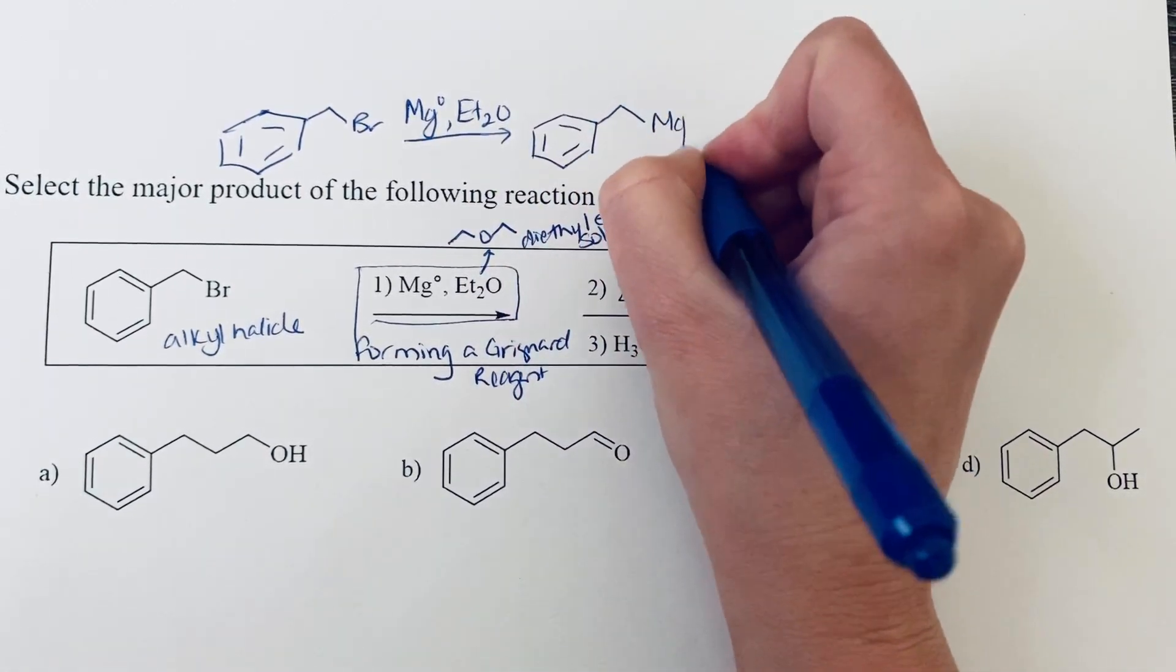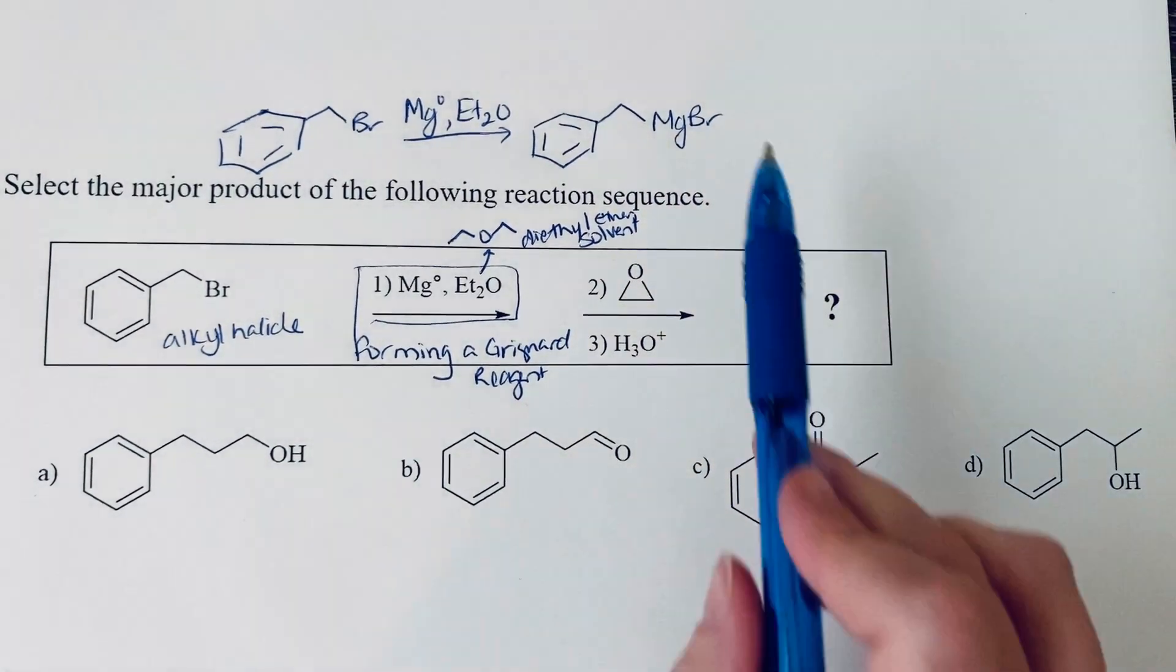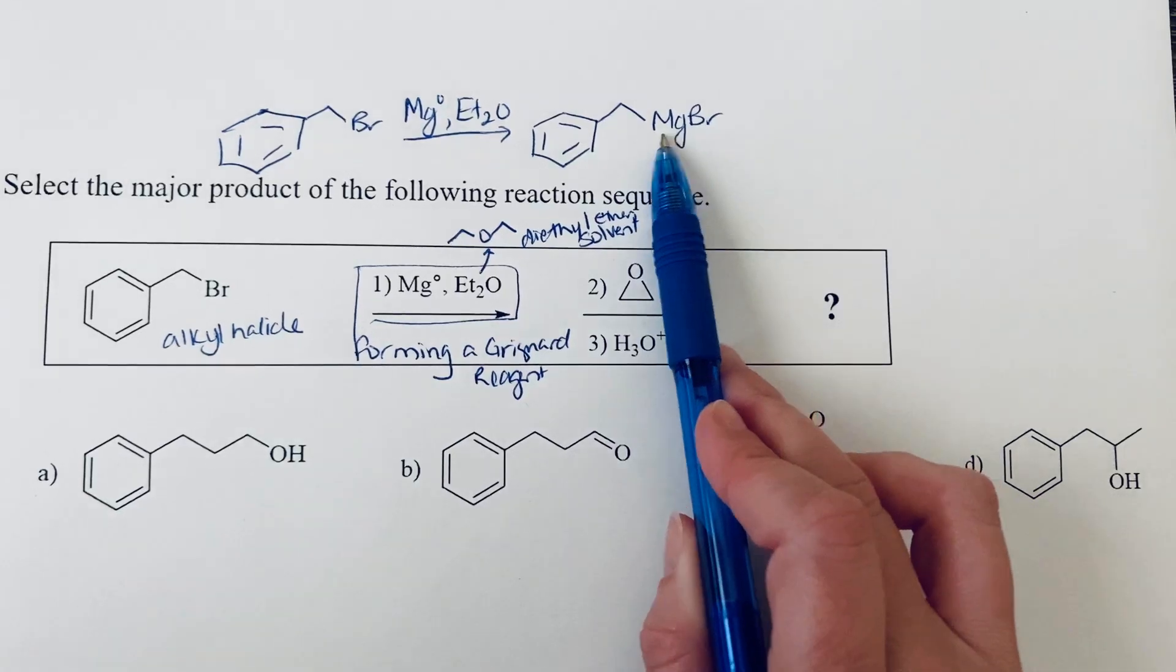So we end up with a structure that looks like this, and this is a Grignard reagent. So the halogen is still associated with the magnesium.